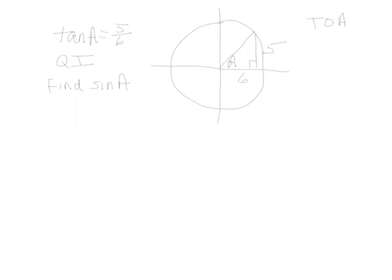Now we have to use SOHCAHTOA. Tangent is opposite over adjacent, and tangent is 5/6, so the opposite side from A is 5 and the adjacent side is 6. We are given two sides of the triangle — you will always be given two sides. Now we need to find the third side using the Pythagorean theorem. x² = 5² + 6² = 25 + 36 = 61, so x equals the square root of 61.